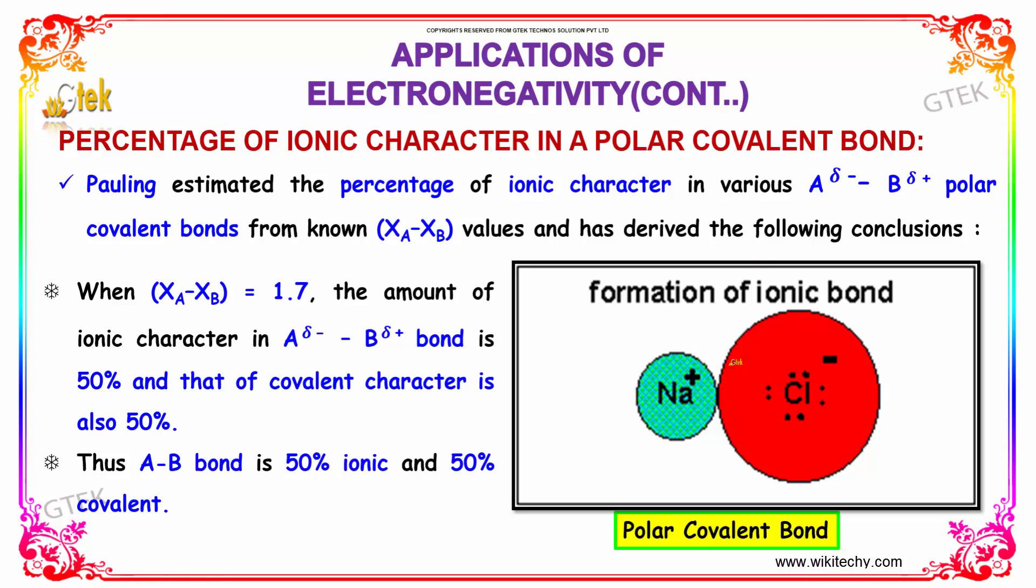The conclusions derived are: when xA minus xB equals 1.7, the amount of ionic character in A delta minus B delta plus bond is 50% and that of covalent character is also 50%. Thus the AB bond is 50% ionic and 50% covalent.